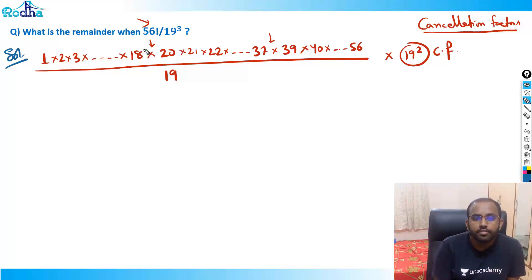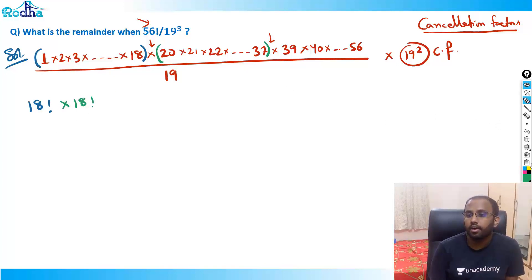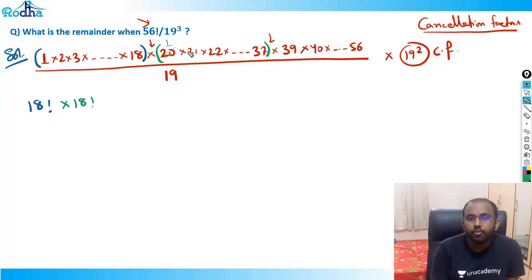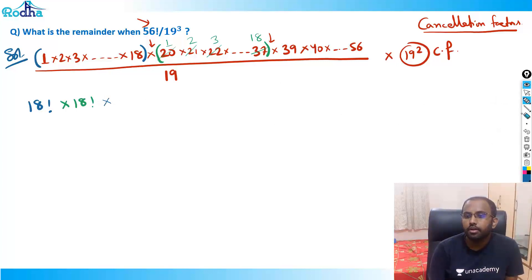Now observe: 1 through 18 becomes 18 factorial. Then 20 through 37 — can I say that's again 18 factorial? Yes, because 20 mod 19 = 1, 21 mod 19 = 2, 22 mod 19 = 3, all the way to 37 mod 19 = 18. So it's equivalent to 1 through 18 again — another 18 factorial.